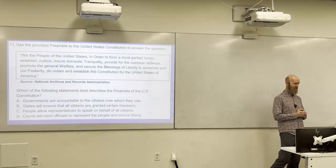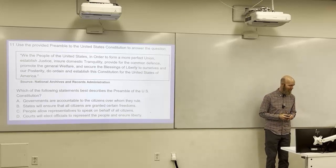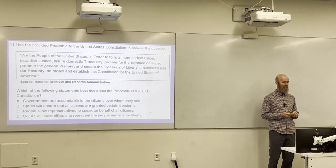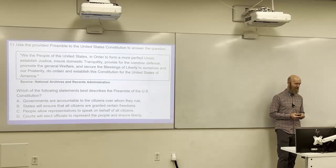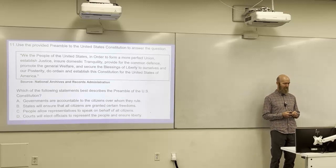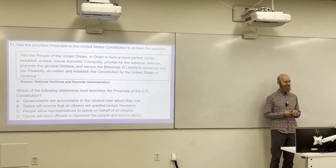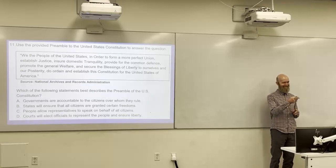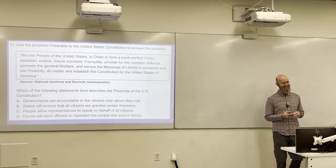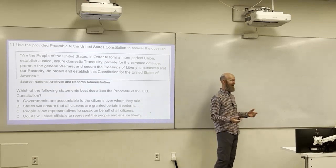Using the preamble — 'We the people of the United States, in order to form a more perfect union, establish justice, ensure domestic tranquility, provide for the common defense, promote the general welfare, and secure the blessings of liberty to ourselves and our posterity, do ordain and establish this Constitution for the United States of America' — which statement best describes the preamble? A: governments are accountable to the citizens over whom they rule. B: states will ensure citizens are granted certain freedoms. C: people allow representatives to speak on behalf of all citizens. D: courts will elect officials to represent the people. The answer is A — 'We the people' form the government, so the government is accountable to the people.